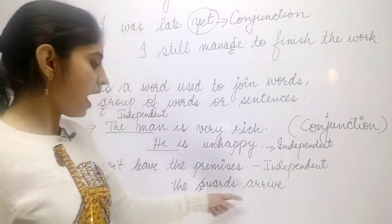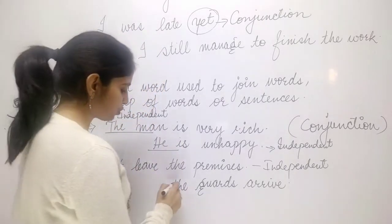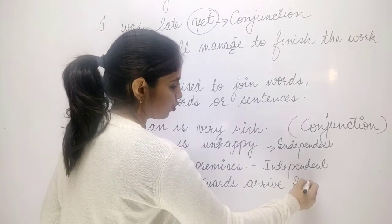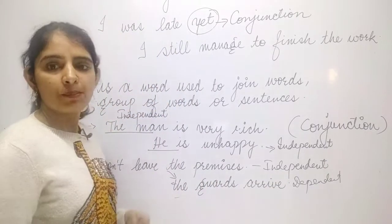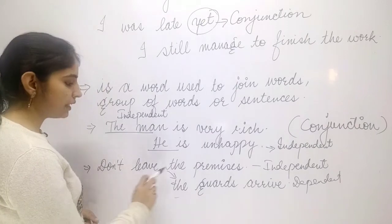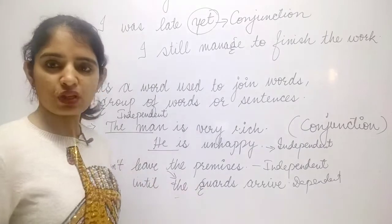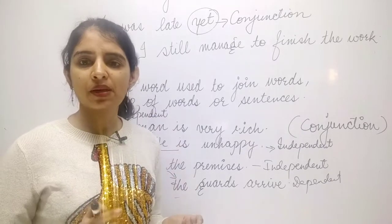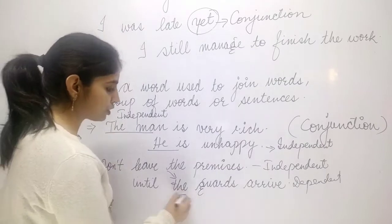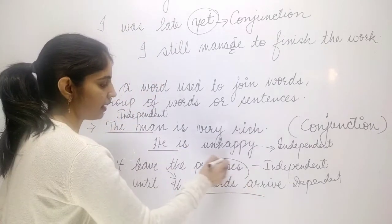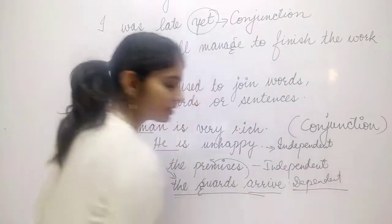Next: 'the guards arrive.' This sentence is a little incomplete, so I will call it dependent. If I add the first sentence, it becomes more meaningful: 'Don't leave the premises until the guards arrive.' Now that is more meaningful. So 'until the guards arrive' depends on the first sentence to complete the meaning — it is a dependent sentence.